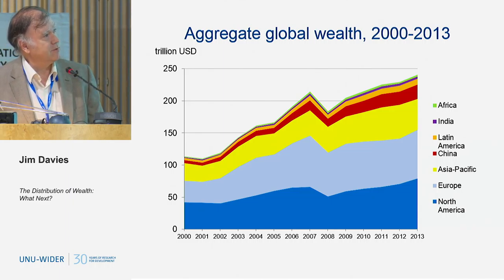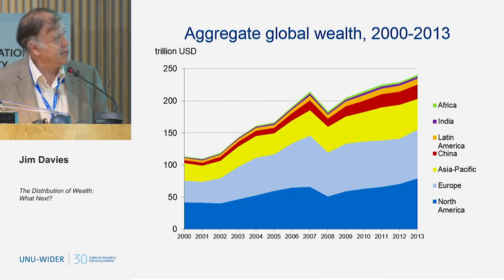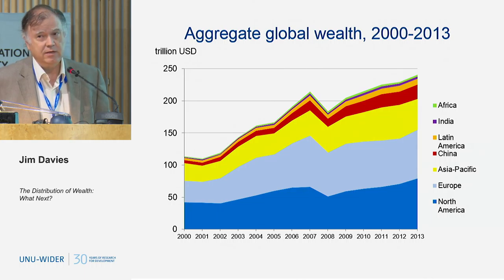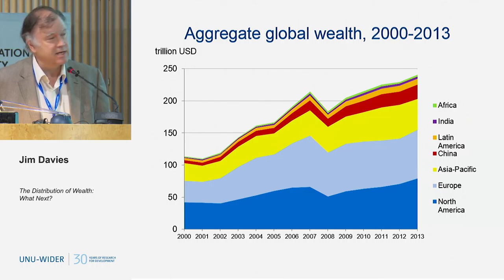Here we've got a chart of aggregate household wealth from 2000, going up to 2013. You can see that basically household wealth has been rising fairly well around the world, except for the period of the global financial crisis. Not all regions have rebounded with equal success from the financial crisis, but world wealth has been growing.